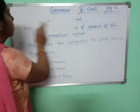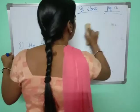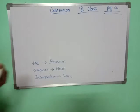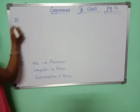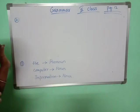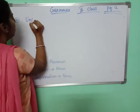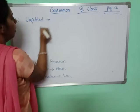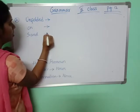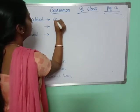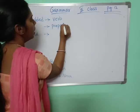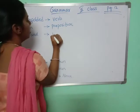Second one: She unfolded the towel on the sand. The underlined words are: 'unfolded,' 'on,' and 'sand.' So 'unfolded' is a verb. 'On' is a preposition — it tells us where the thing is kept. And 'sand' is a noun.